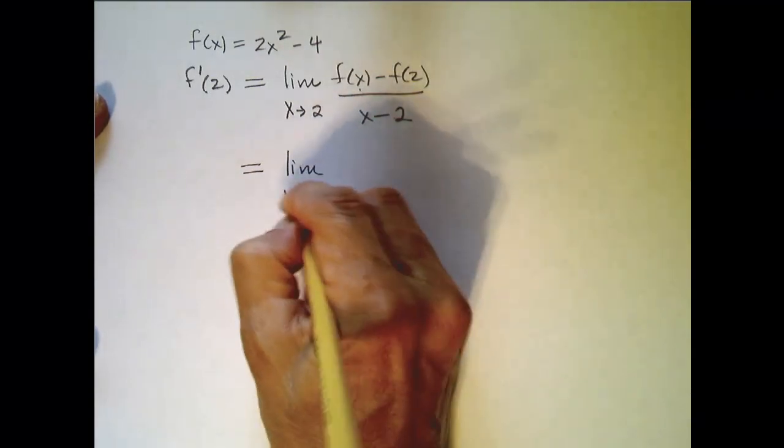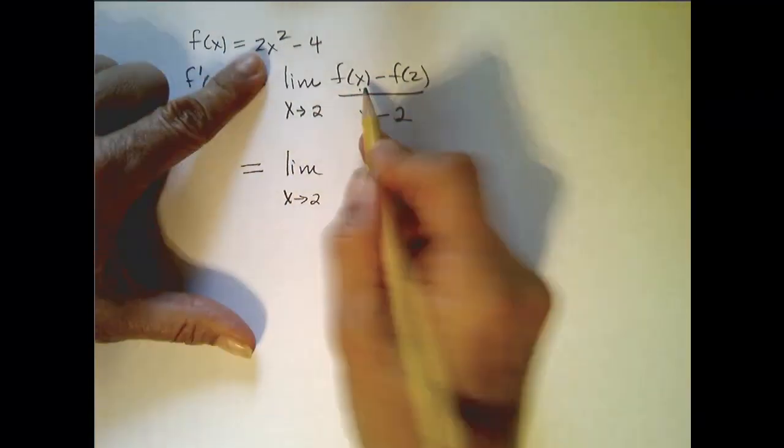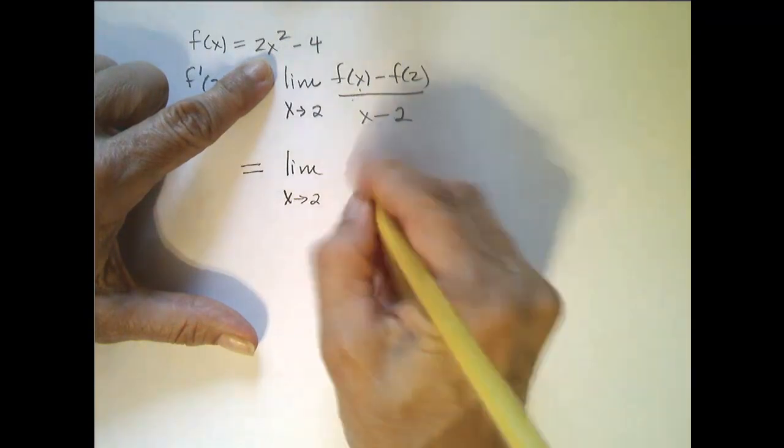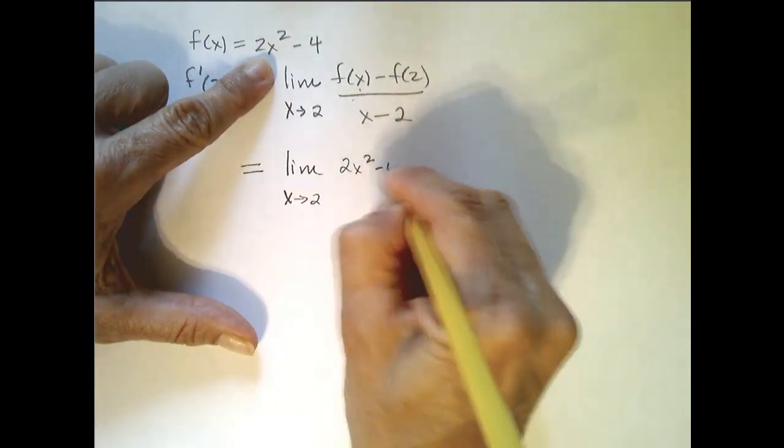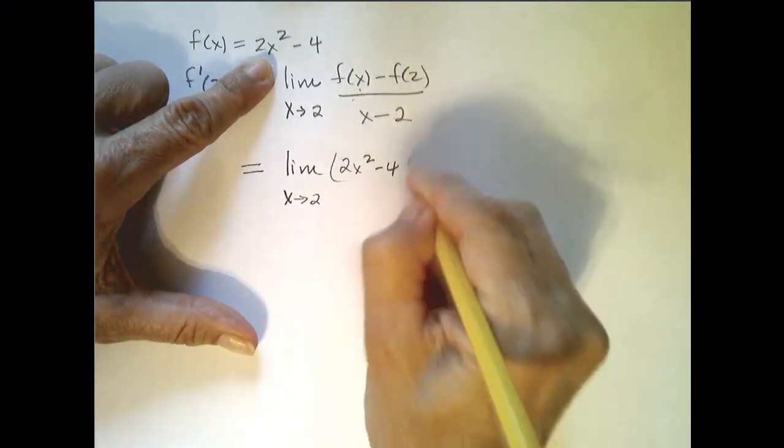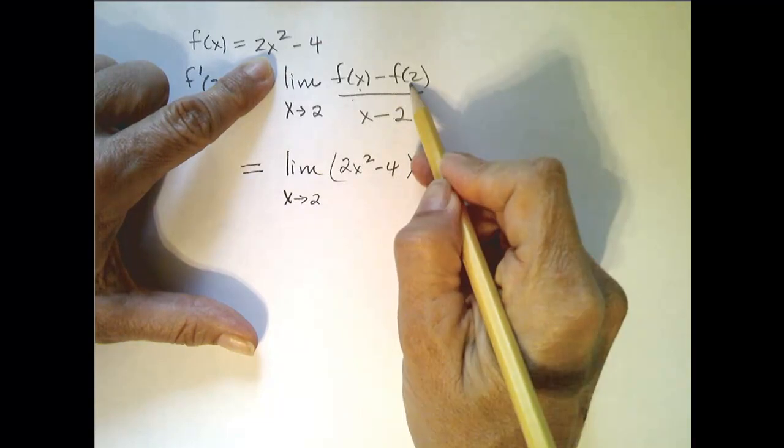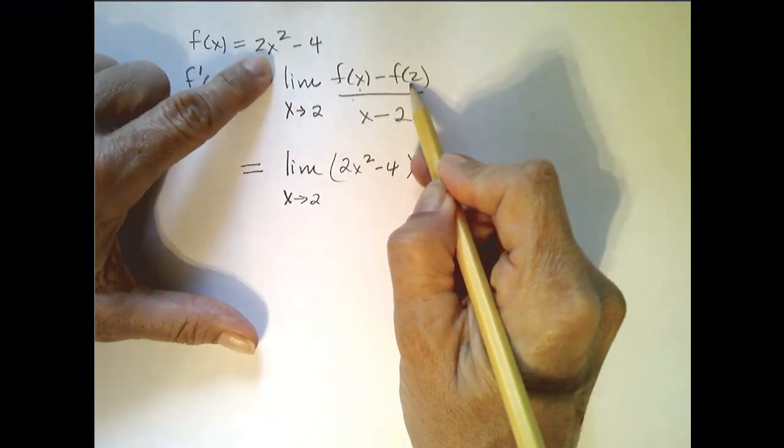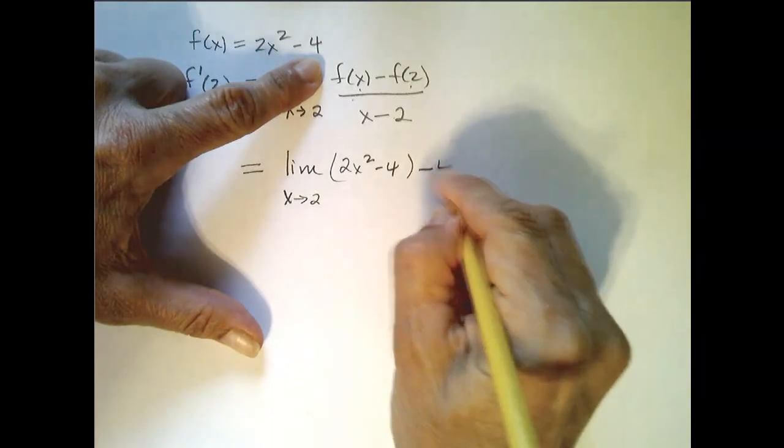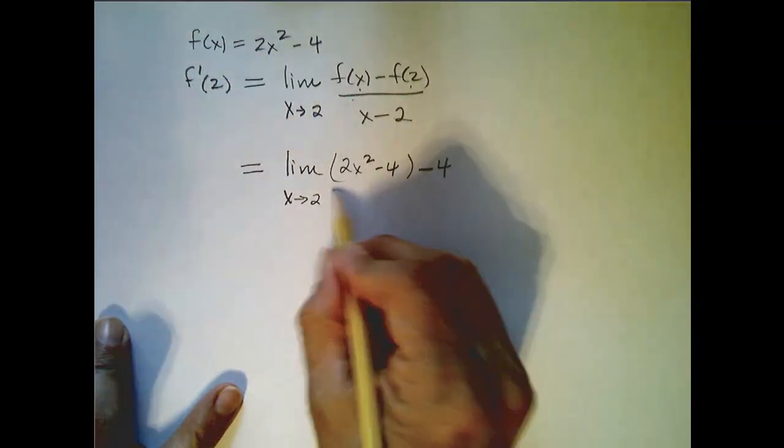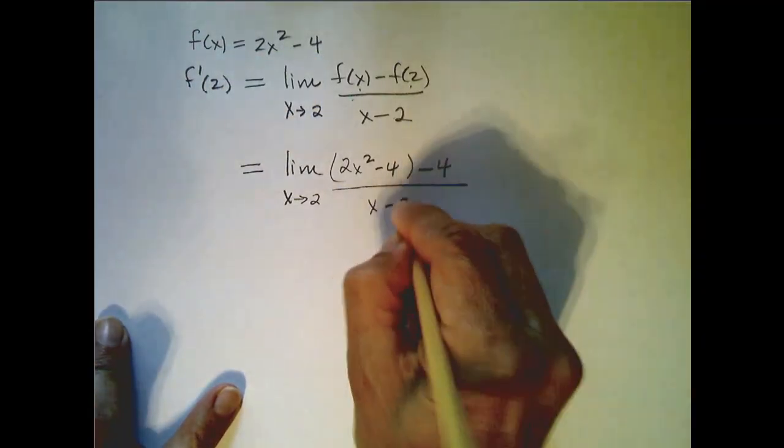So, the limit as x approaches 2, so my function at x is just 2x squared minus 4, minus, now let's evaluate this function at 2, so it's 2 times 4, which is 8, 8 minus 4 is 4, all over x minus 2.